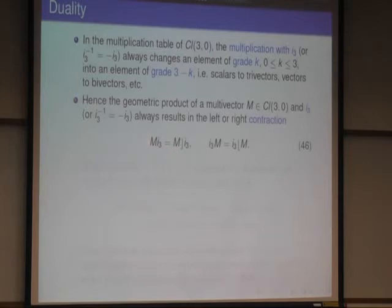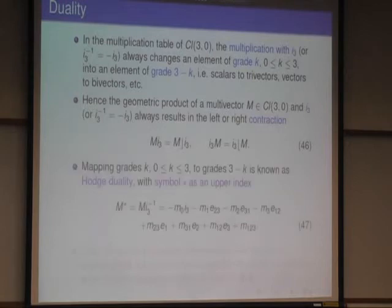And therefore, instead of writing the general product, here you simply can write the contractions, no mistake, it looks nice. And the mapping of multiplication with I3 and changing the grade in this precise way is known as Hodge duality, and it gets a simple star as an upper index, and we'll use instead of I3, I3 inverse, it's just a convention, and here I've written the result, which you can easily take from the multiplication table.